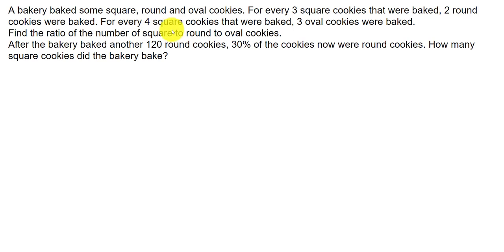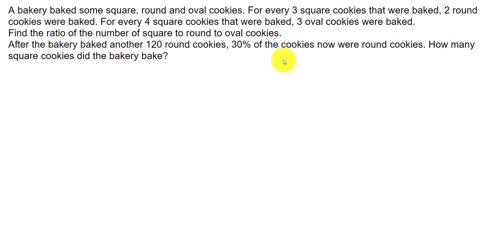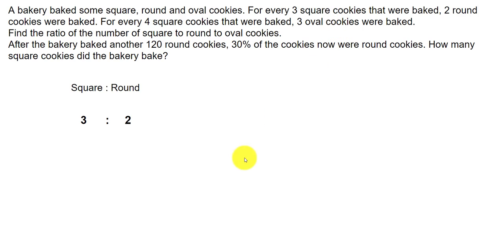For every four square cookies that were baked, three oval cookies were baked — that's a separate ratio of square to oval cookies. The question asks us to find the ratio of the number of square to round to oval cookies. We know the ratio of square to round is 3:2, and the ratio of square to oval is 4:3.